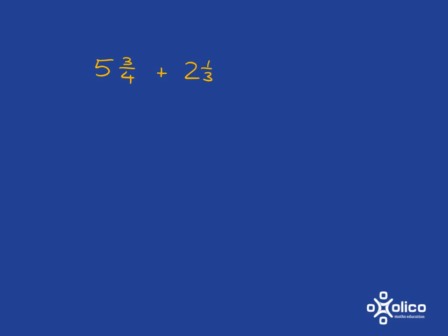The first way is just to turn them into improper fractions. So here we would say 5 times 4 is 20 plus 3, that's 23 over 4, and 2 times 3 is 6 plus 1 is 7, so it's 7 over 3.